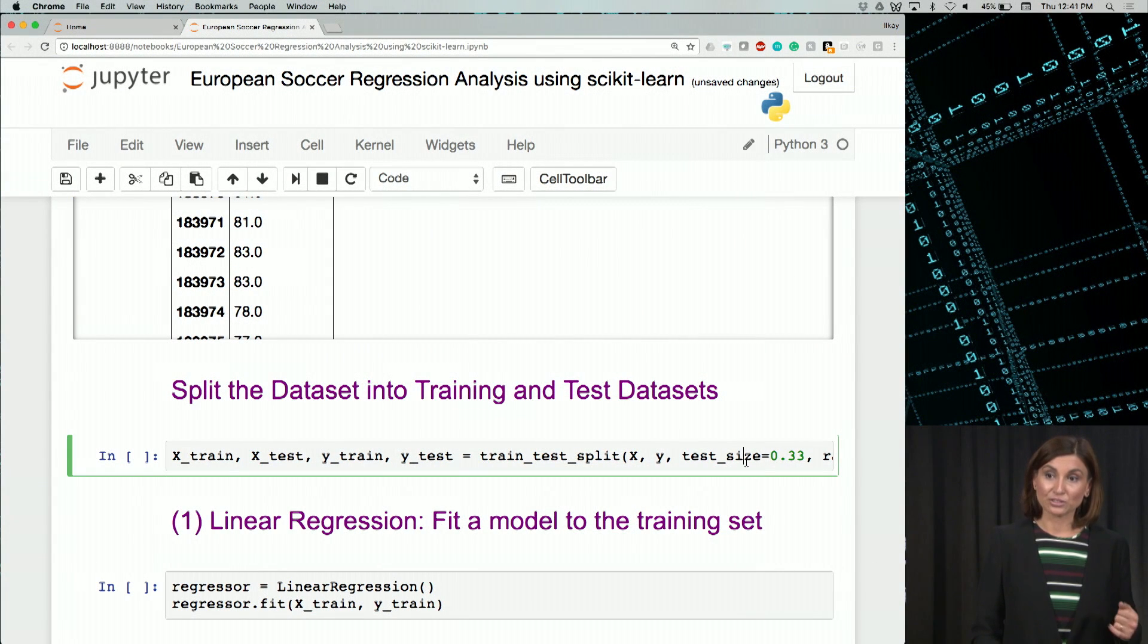We are doing the same operation using train test split. We are splitting the data set into test and training sets. So we can use one for training and the rest for testing of the regression algorithm. Let's run this cell.